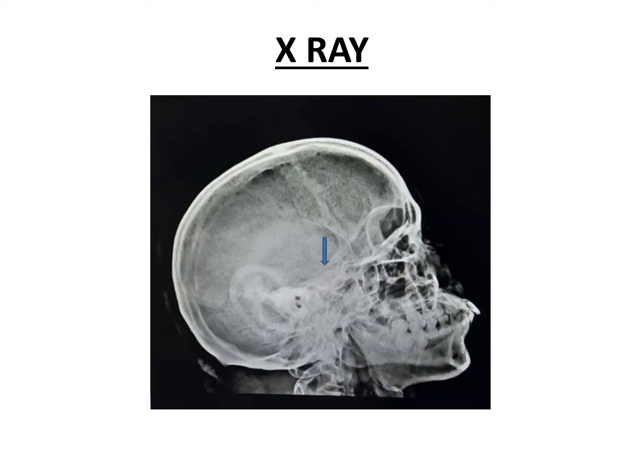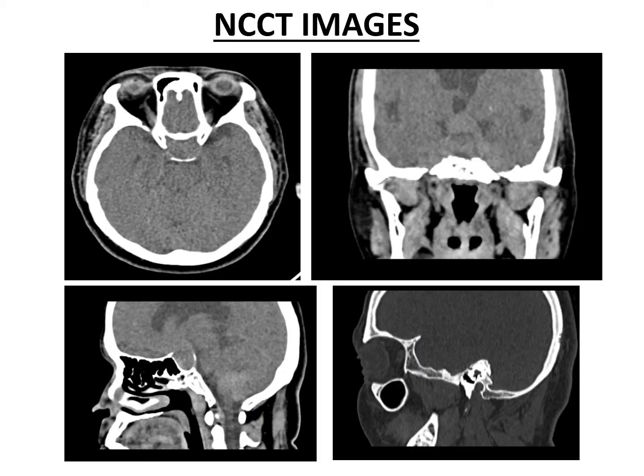X-ray skull lateral view shows a widened sella turcica. Non-contrast CT images reveal a large soft tissue density mass lesion involving the sellar and suprasellar region. It is causing deepening and widening of the floor of the sella turcica. However, no evident extension is seen in the sphenoid sinus.